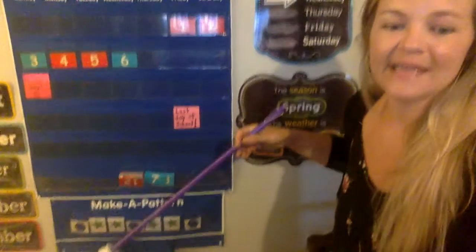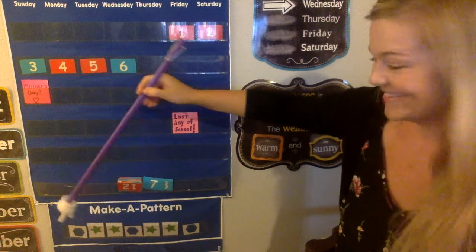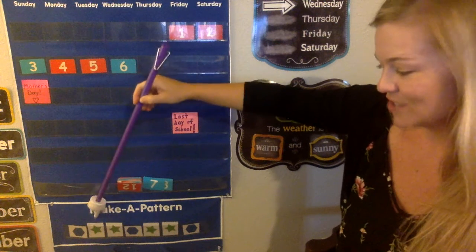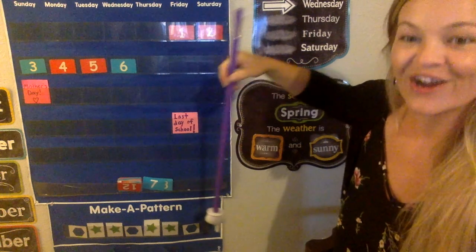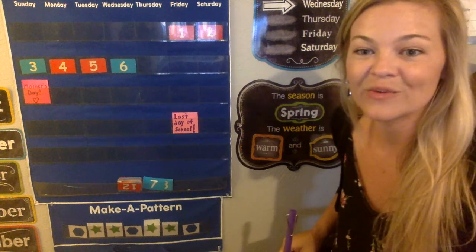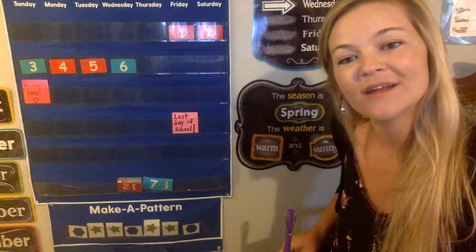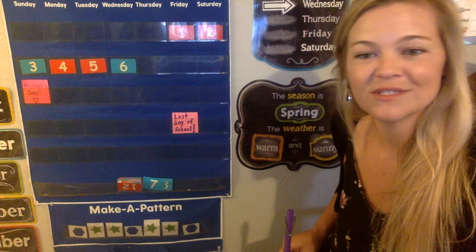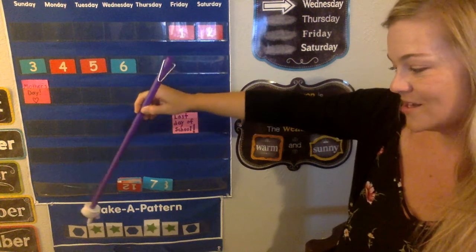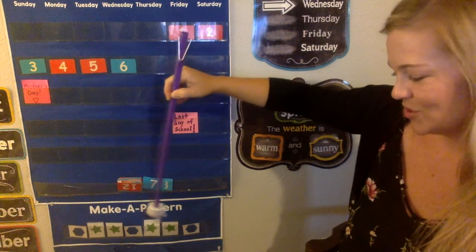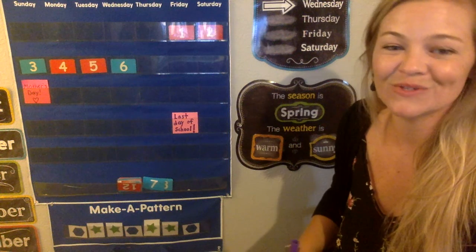Let's do the pattern together by shape. We have hexagons and then stars. Hexagon, star, star. Hexagon, star, star. Hexagon, star, star. What kind of number pattern would that be? The hexagon would be one, the stars would be twos. Let's see together: one, two, two. One, two, two. One — so two, two would be next. That's a one, two, two pattern.